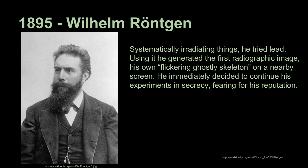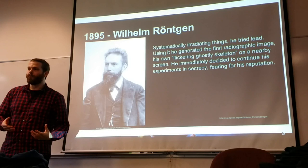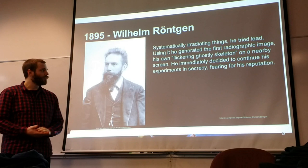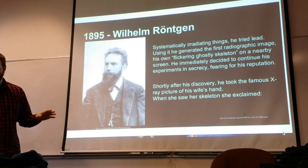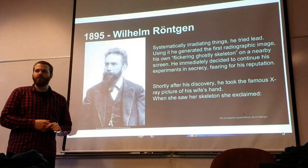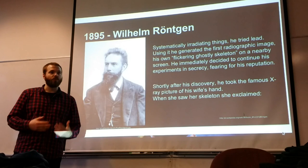Systematically irradiating things, he inevitably tried lead, which was easy to refine at the time and plentiful. Using it, he generated the first radiographic image — his own 'flickering ghostly skeleton on a nearby screen.' When he saw this, he claimed in his Nobel speech that he immediately decided to continue his experiments in secrecy, fearing for his professional reputation in case he had been wrong. He did let his wife in on the secret, and shortly after his discovery he took the famous X-ray picture of his wife's hand — it is, in fact, his wife's hand.